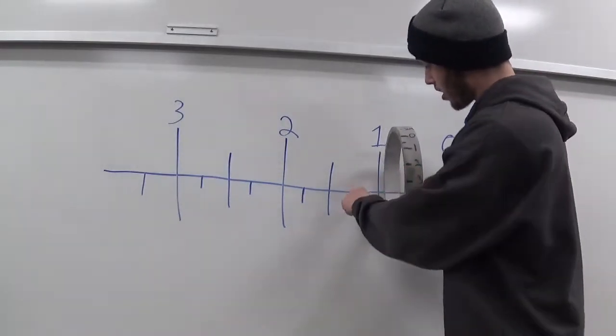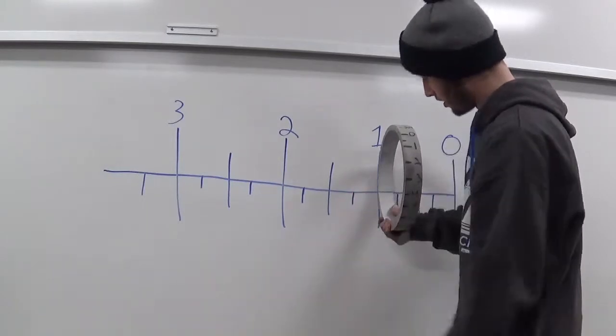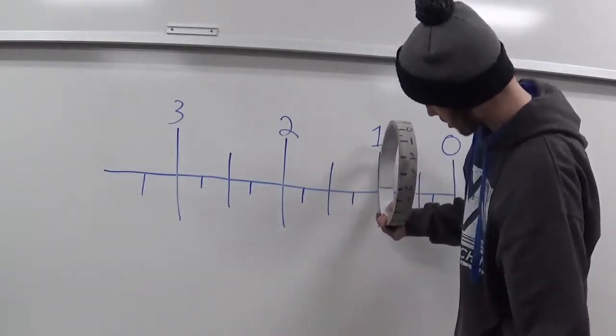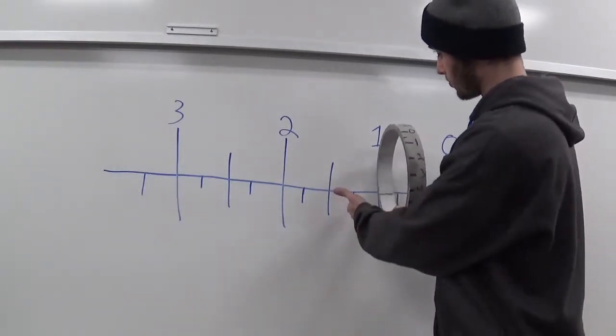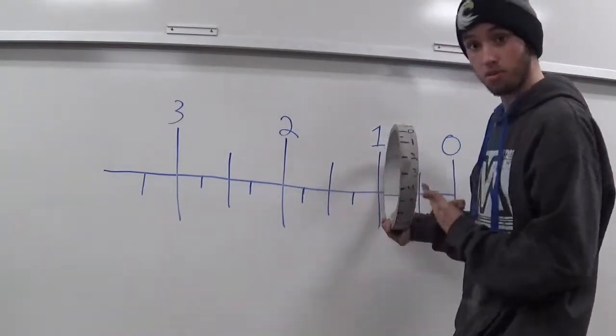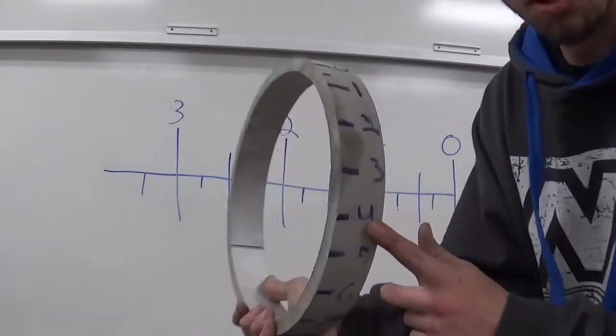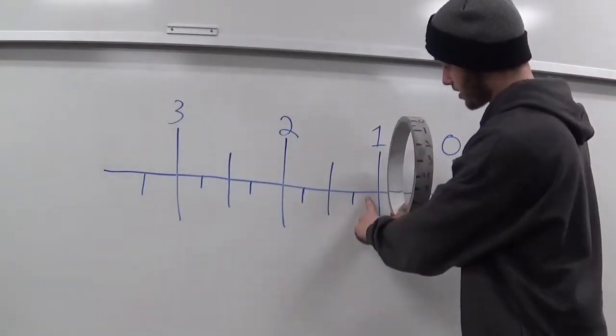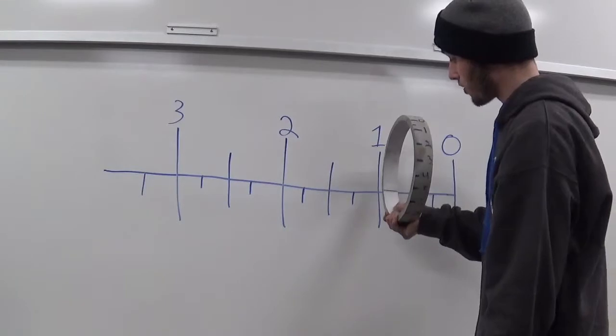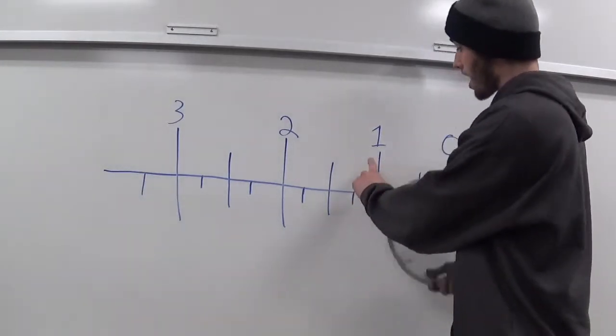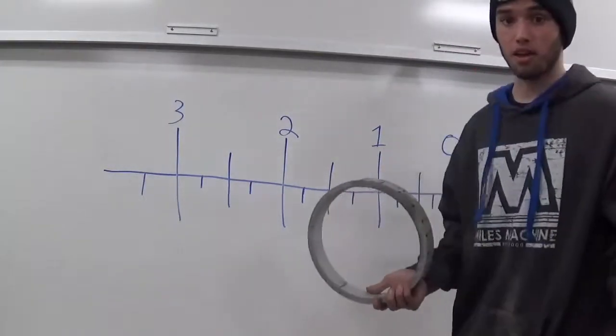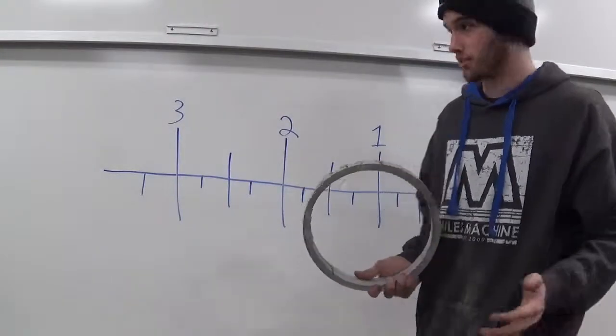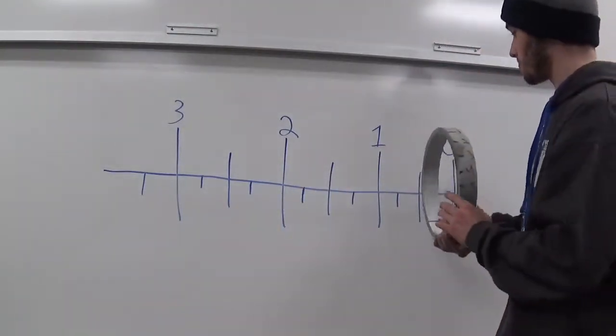Now I'm looking for whatever number best lines up with this center line here. So here I'm going to say this three, this number three here—I hope you guys can see that good—three lines up best with this line, so that's letting me know that I'm three thousandths past the 100. So that's telling me I have 103 thousandths.